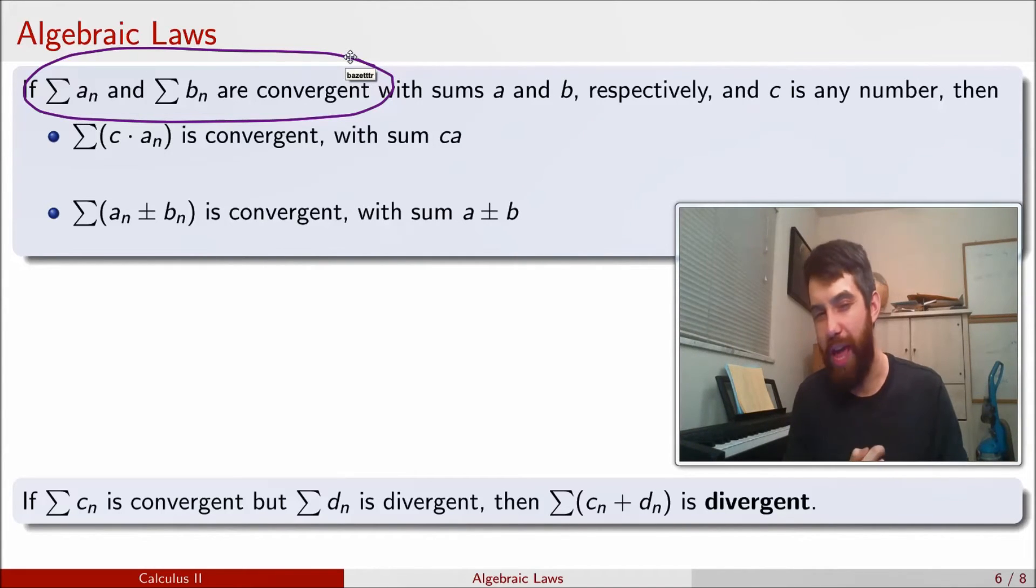It's also the case that if both the Aₙ and the Bₙ diverge, so both the Aₙ and the Bₙ diverge, then we actually don't know what the answer is. If a sum of two things that individually diverge, then the term-by-term sum, it might diverge. It might converge. We don't know. And there's going to be examples on both sides.